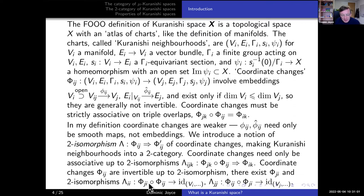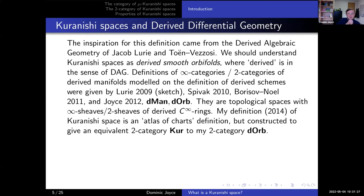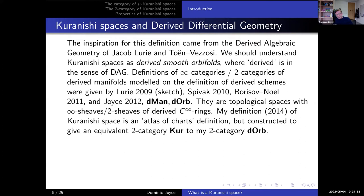So we just move everything up one categorical level and work with two-categories rather than one-categories — two-categories of charts really. These ideas came from derived algebraic geometry in the sense of Jacob Lurie, Bertrand Toën, and Gabriele Vezzosi. I claim we should understand Kuranishi spaces as being derived smooth orbifolds, where 'derived' is in the sense of derived algebraic geometry. Derived spaces have a geometric structure which is an enhanced version of the structure on classical spaces, remembering obstructions as well as deformations.